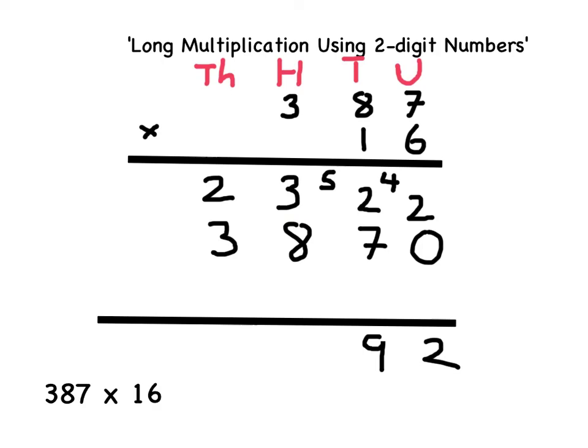To show this as part of this step of my long multiplication, I must write the 1 for the 100 in 1,100 here, and the 1 to represent the 1,000 in 1,100 here.